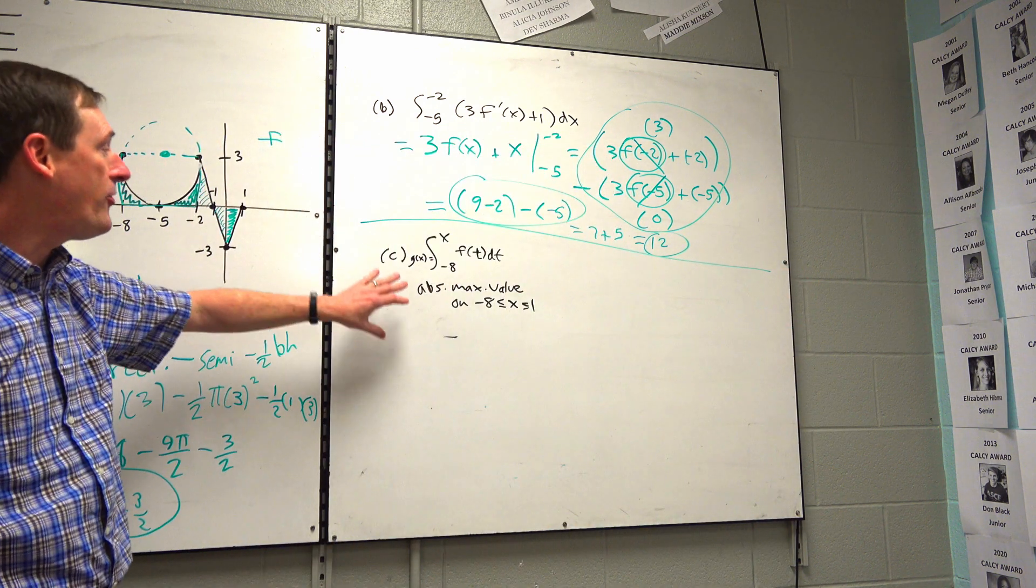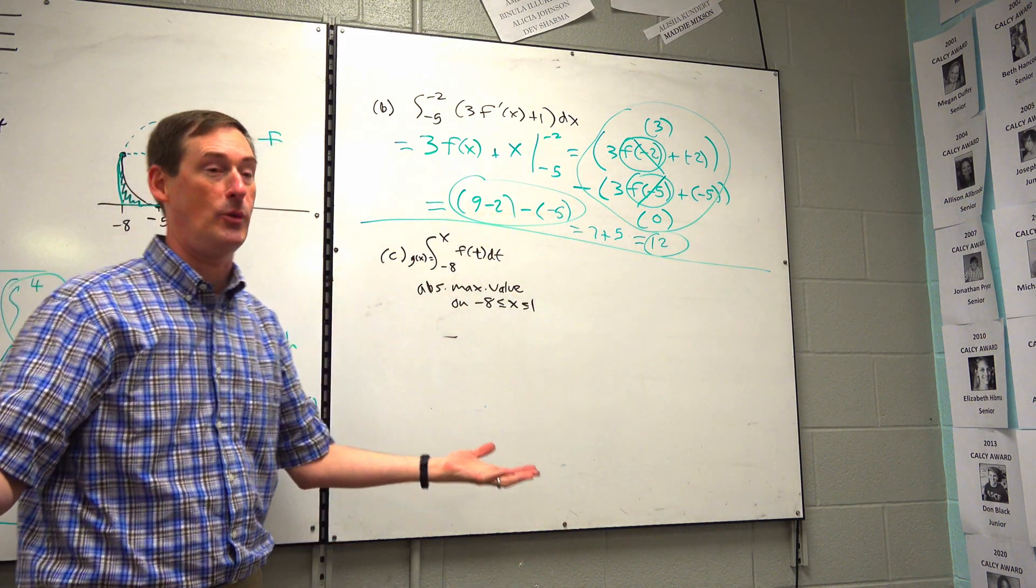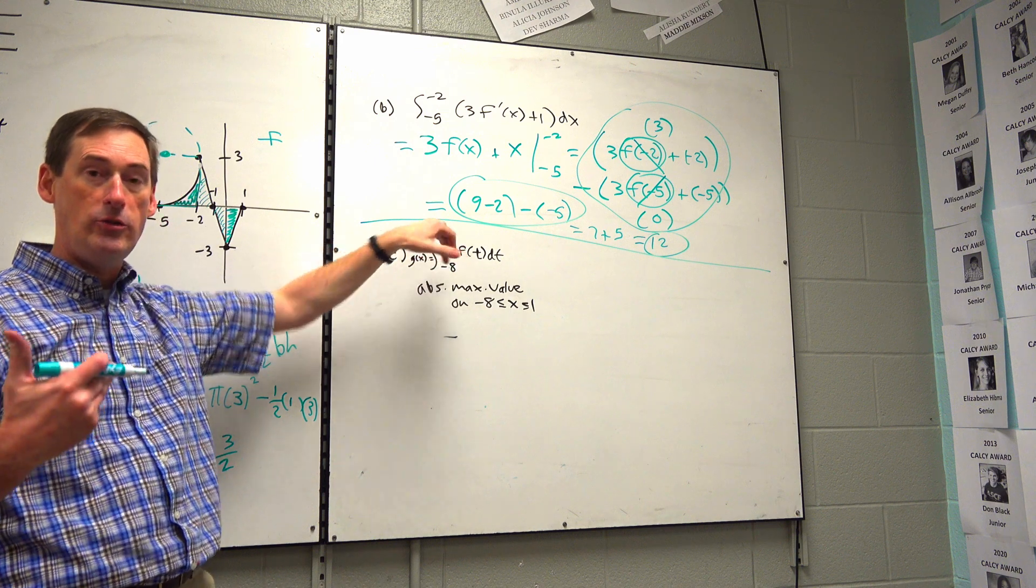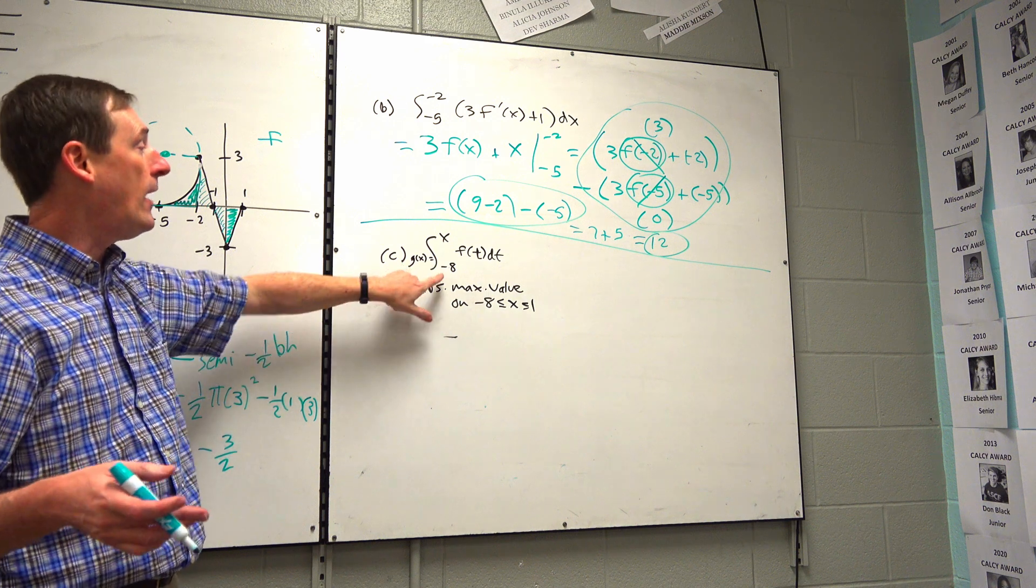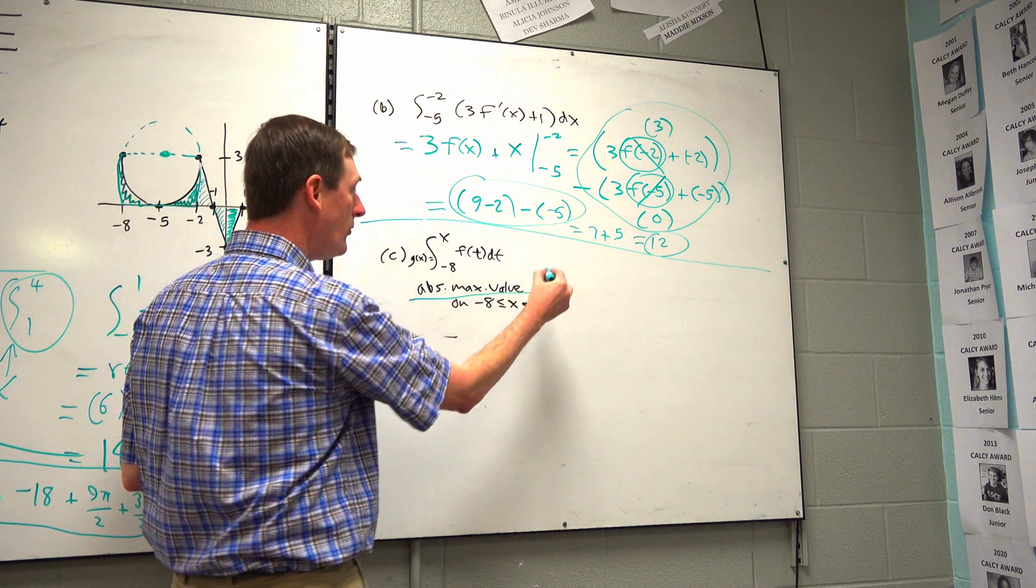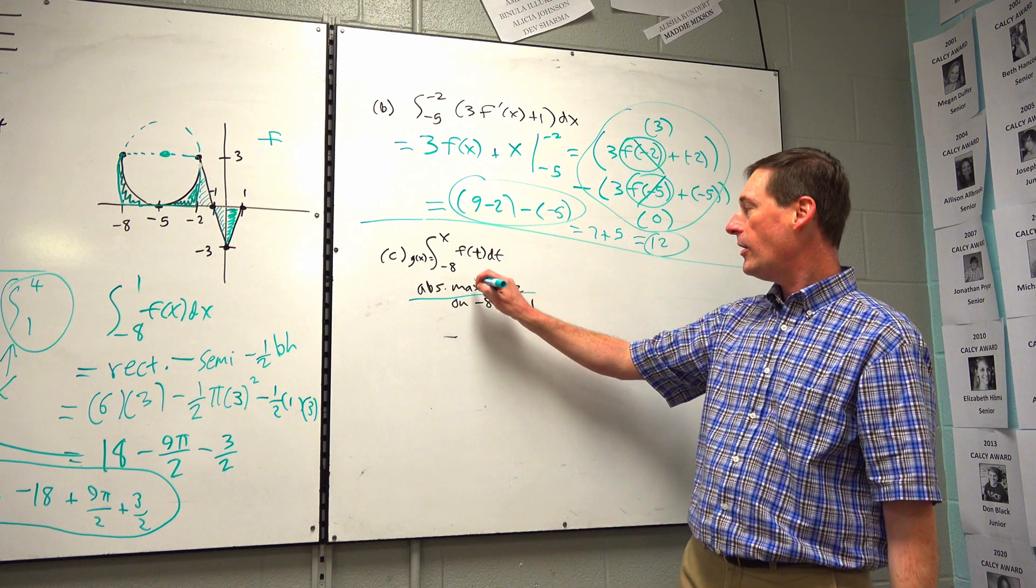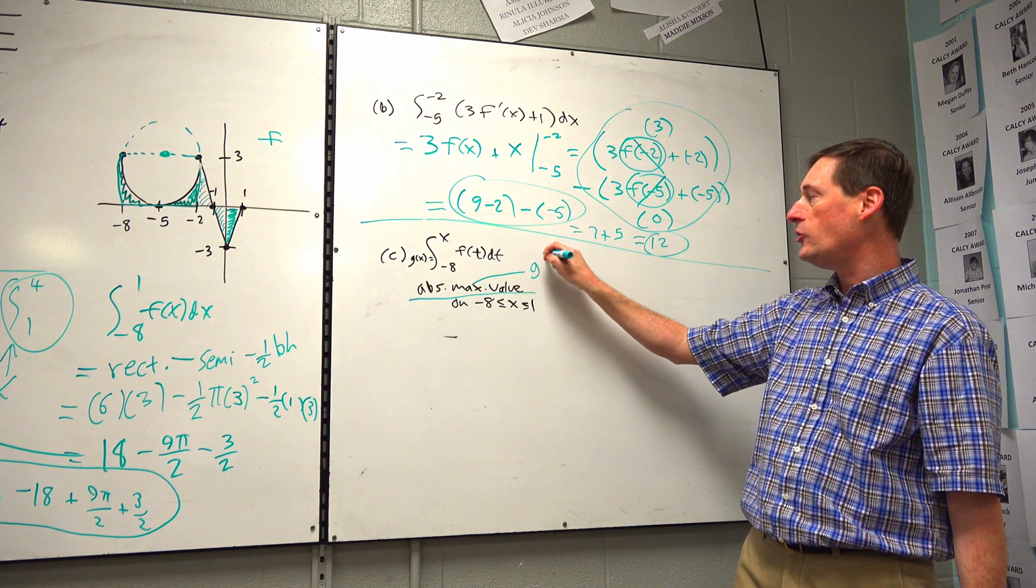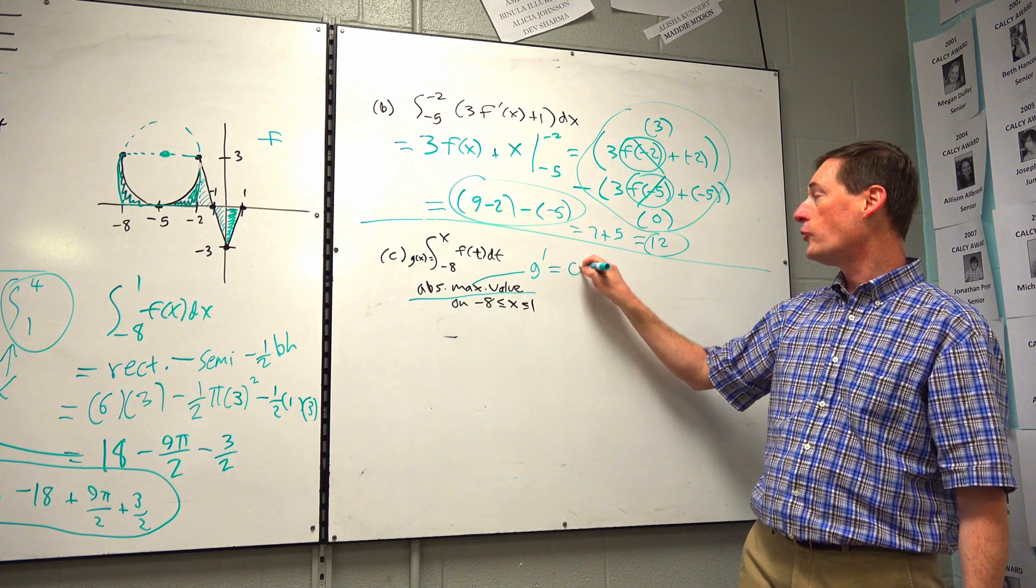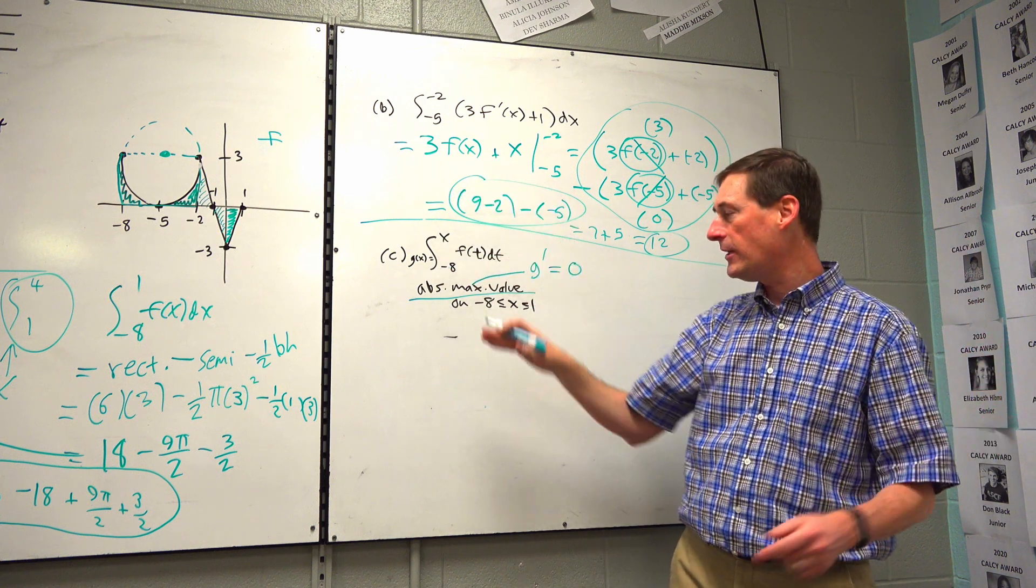Letter C: There's another function that jumps into the problem now, G of X. G of X is the area under the picture F from negative eight to, and then you just stop wherever the number is that you're plugging in. What's G of zero? Area from negative eight to zero. So find the absolute maximum value. When you see the phrase maximum, minimum, increase, decrease, isn't that the first derivative? So max of G, I'm thinking I better go find G prime.